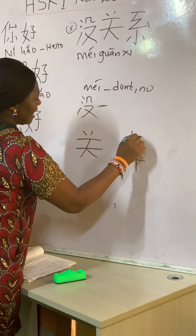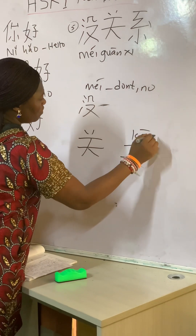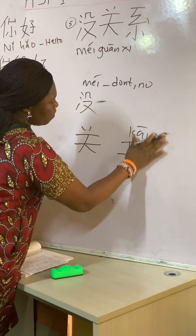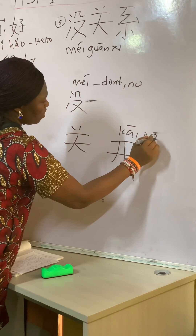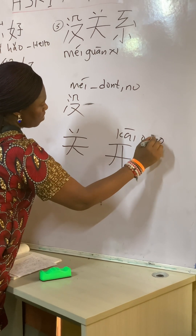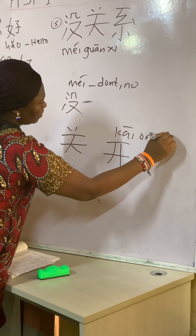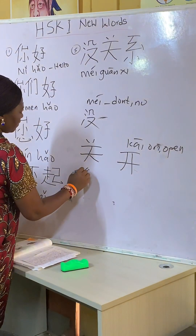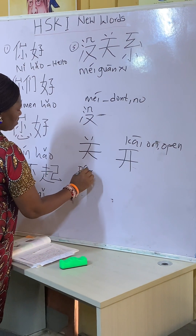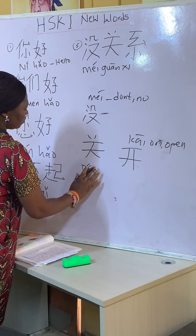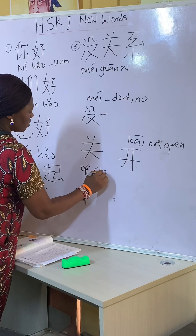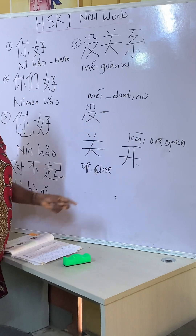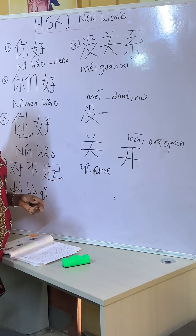开 (kāi) means on or open. So 关 (guān) means off or close. For example, 开门 (kāi mén) means open the door. If you remove 开 (kāi) and say 关门 (guān mén), that means close the door.